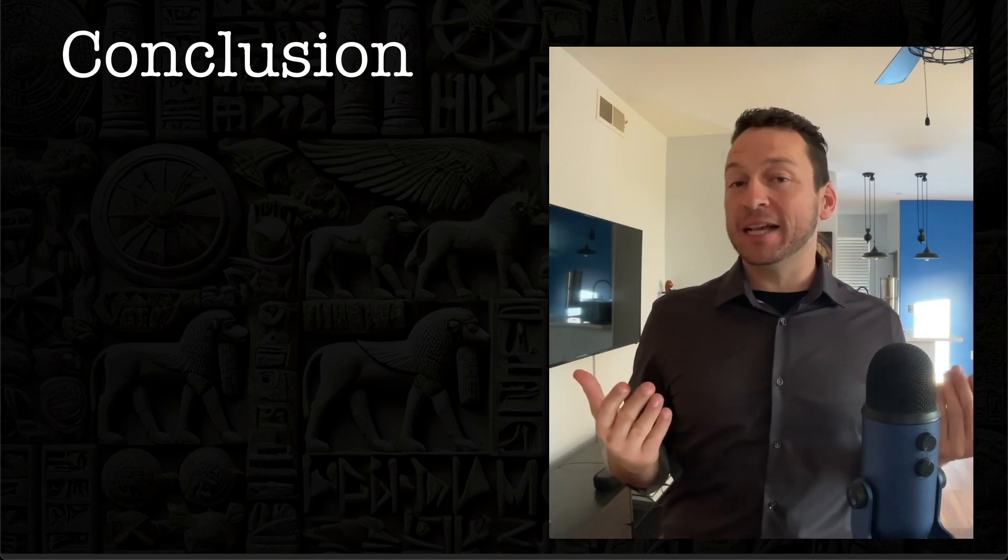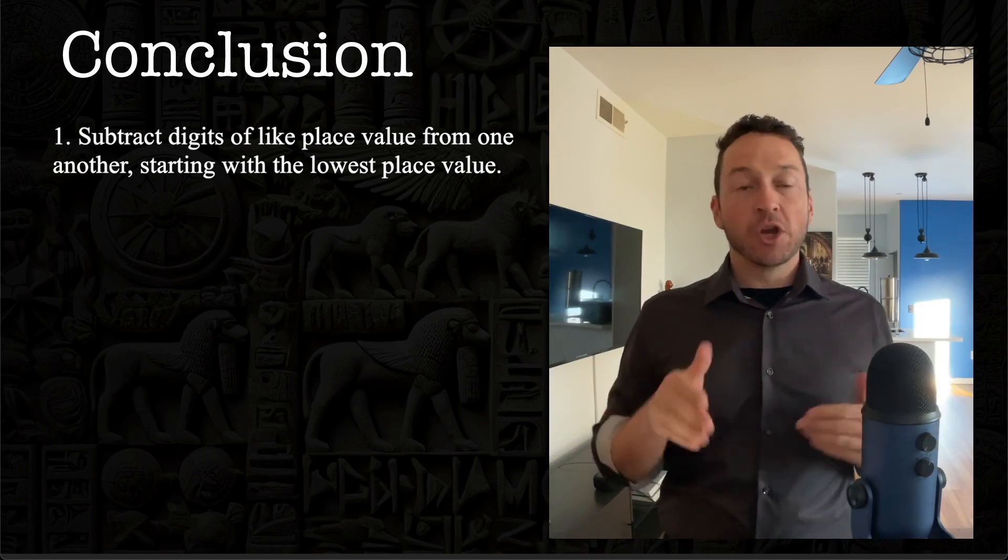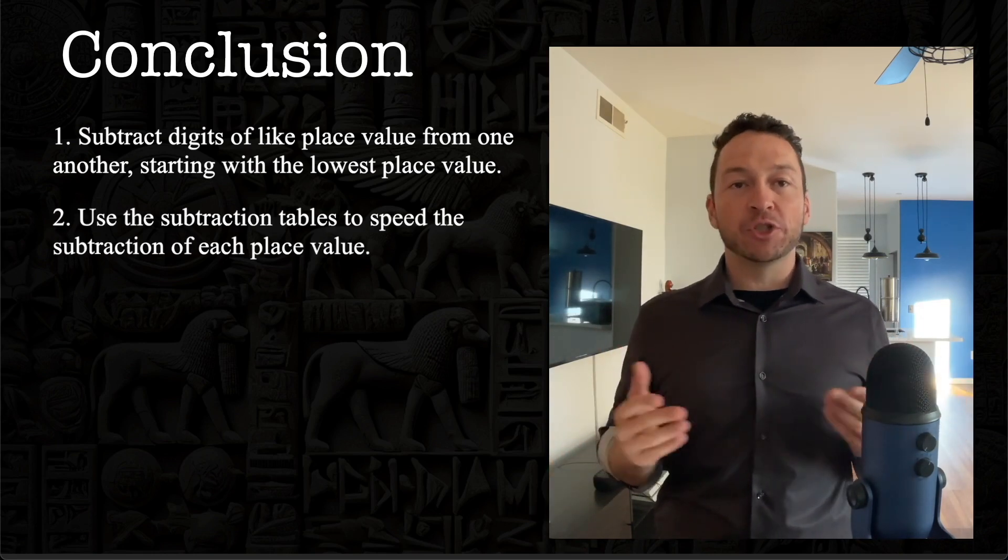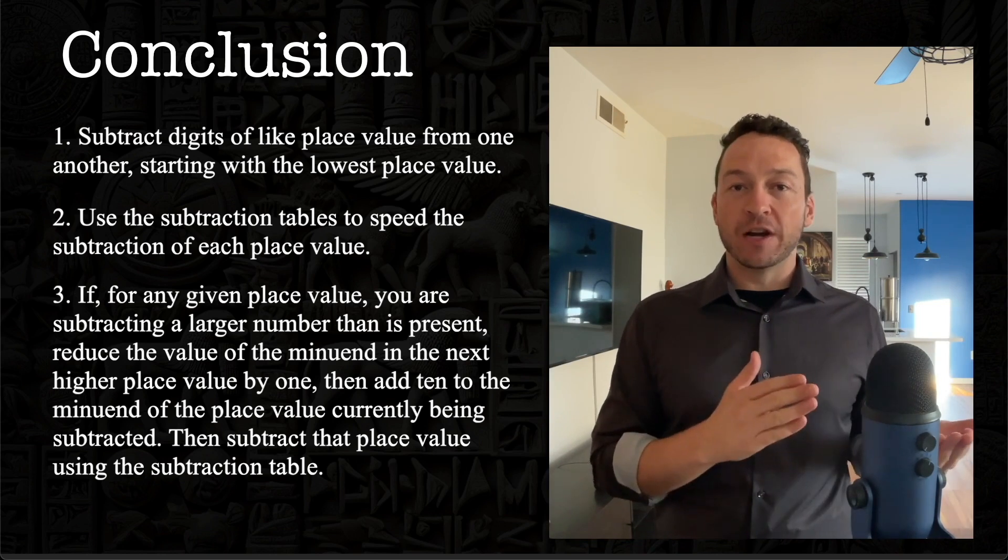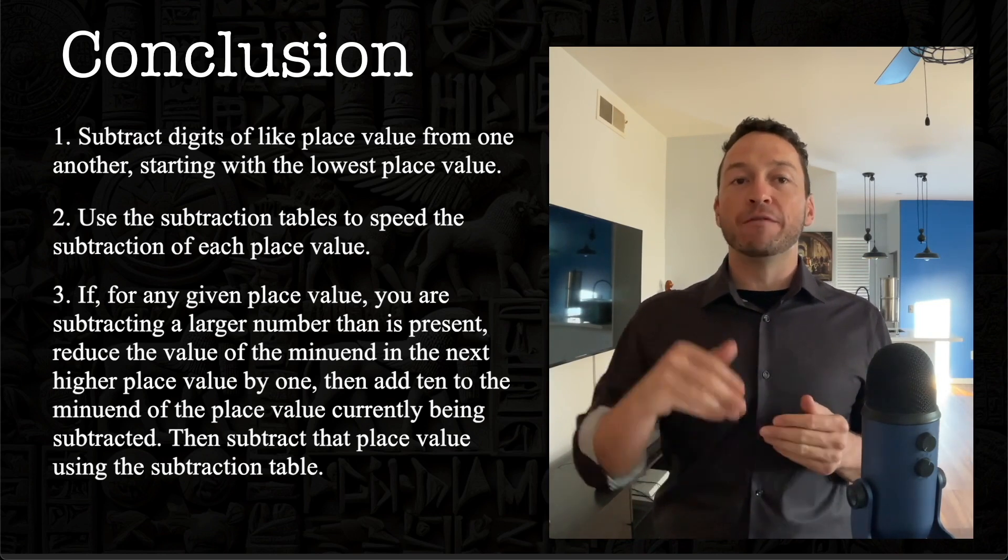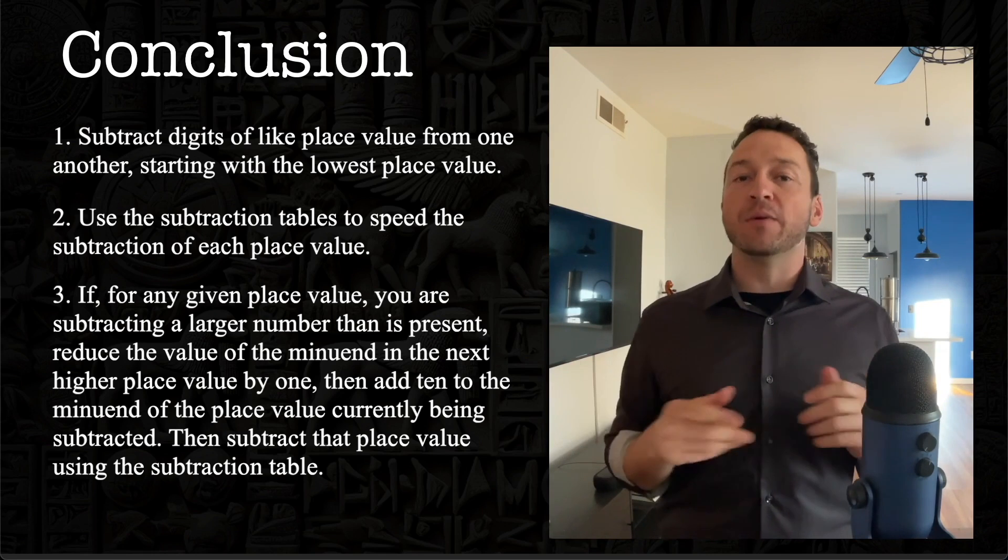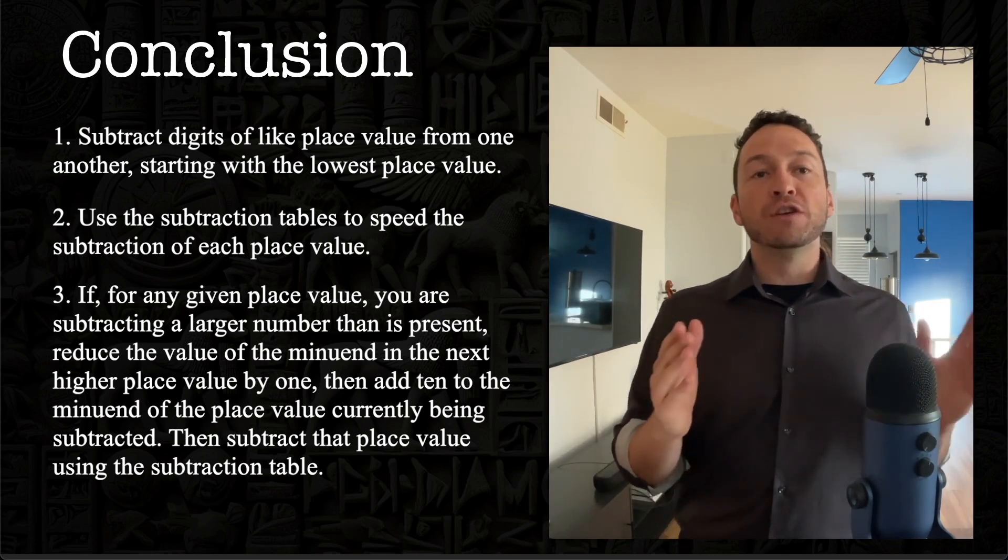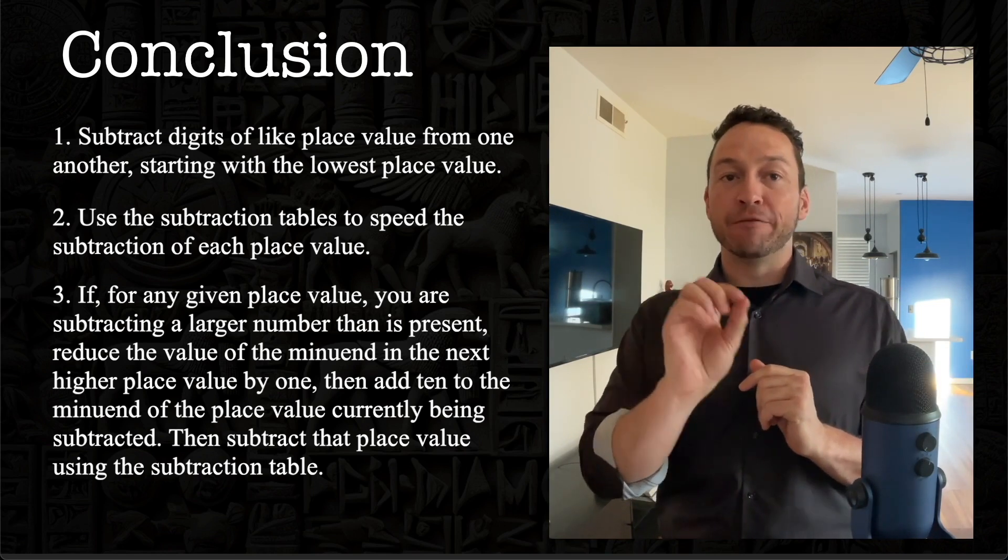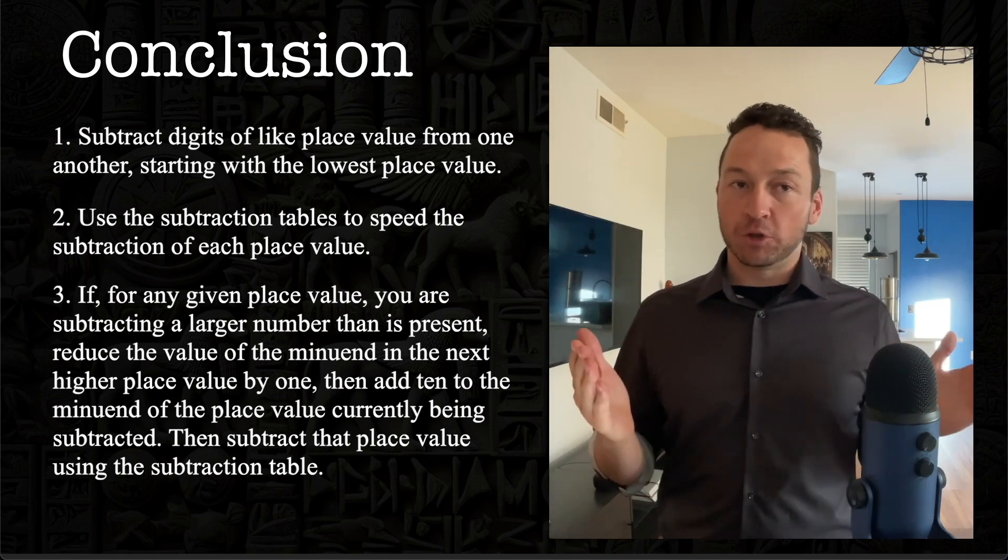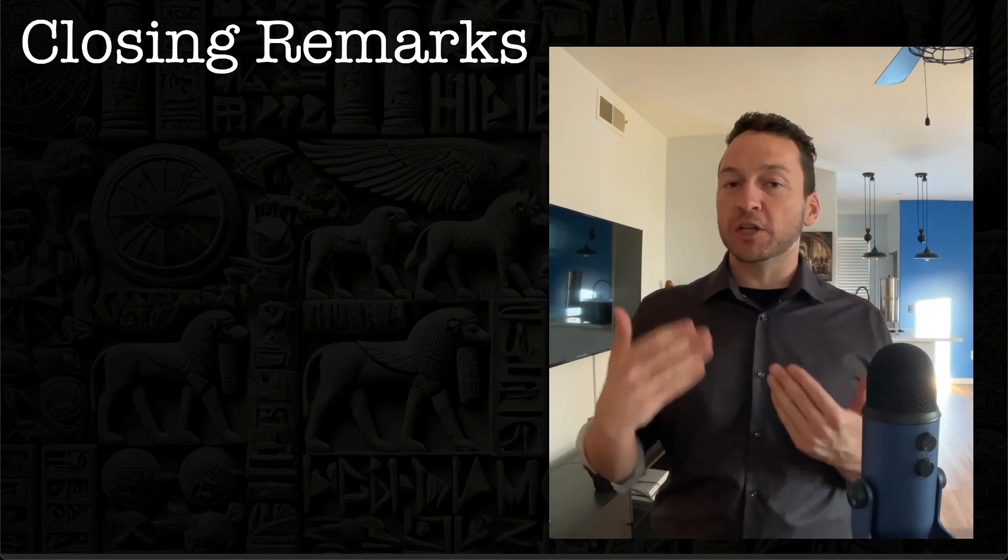So in conclusion, Algamesh summarizes his method of subtraction. Subtract the digits of like place value from one another, starting with the lowest place value. Use the subtraction tables to speed the subtraction of each place value. If, for any place value, you are subtracting a larger number than is present, reduce the value of the minuend in the next higher place by one. Then add 10 to the minuend of the place value currently being subtracted. Then subtract that place value using the subtraction table.